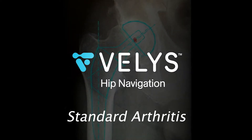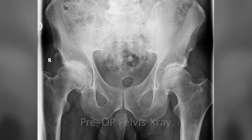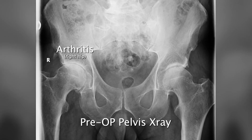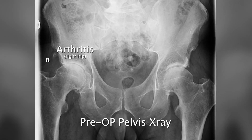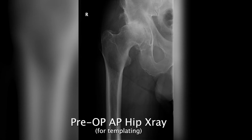Velis Hip Navigation for a Standard Arthritic Hip. This case starts with first looking at an AP pelvis for leg length inequality. I use an AP hip for templating.